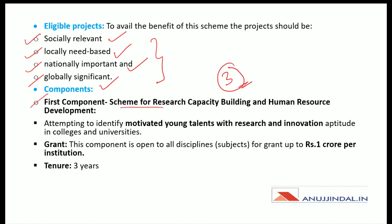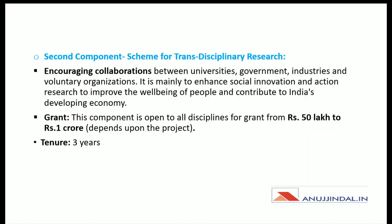Under the first component, it is the Scheme for Research Capacity Building and Human Resource Development. It is an attempt to identify motivated young talents with research and innovation in colleges and universities. The first component is open to all disciplines for a grant of up to rupees 1 crore per institution.